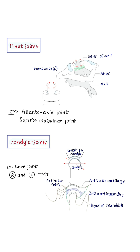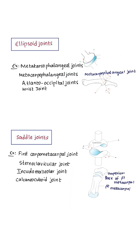Condylar joints: the articular surfaces are condylar — one is convex and the other is concave. Examples include the knee joint and the right and left temporomandibular joints.